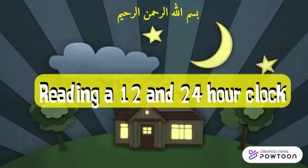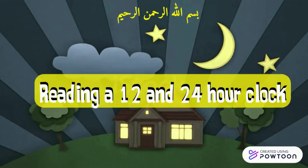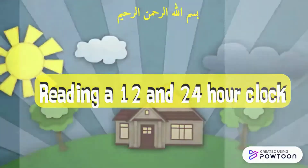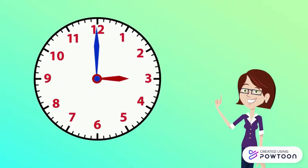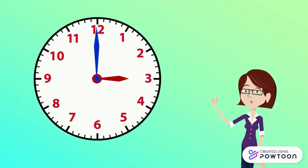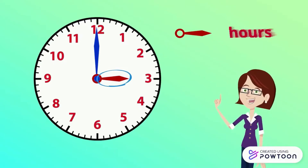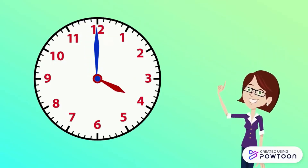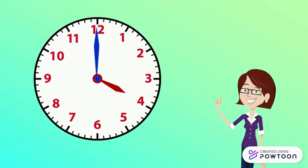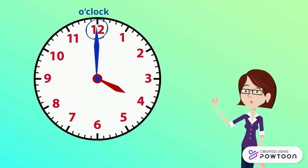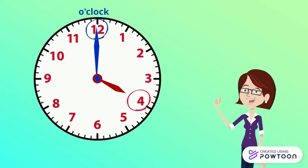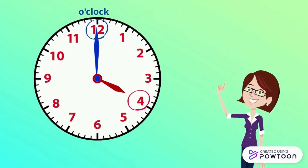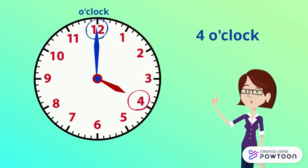In this video we will learn how to read the time in 24 hours. We have already seen how to read full hours. The small red hand indicates the hours and the large blue hand indicates the minutes. When the large hand is on 12, you only need to see the small hand to indicate the time — like here, it is four o'clock.